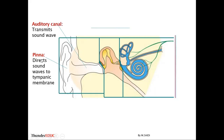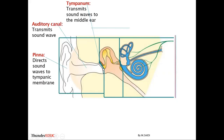The auditory canal transmits sound waves. When the pinna collects the sound it passes it to the auditory canal, which carries the sound vibration to the middle ear. When the sound wave hits the tympanic membrane it vibrates — like beating a drum — causing the three ossicles to change position, transmitting the sound in the form of vibration.